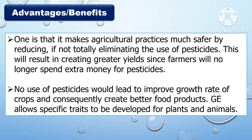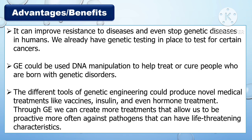Genetic engineering allows specific traits to be developed for plants and animals. It can improve resistance to diseases and even stop genetic diseases in humans — we already have genetic testing in place to test for certain cancers. Genetic engineering could use DNA manipulation to help treat or cure people born with genetic disorders. The different tools of genetic engineering could produce novel medical treatments like vaccines, insulin, and hormone treatments, allowing us to be more proactive against pathogens with life-threatening characteristics.